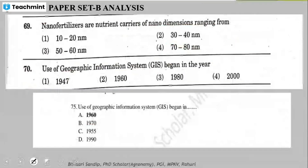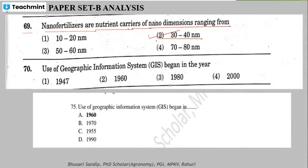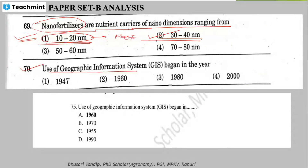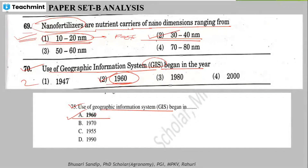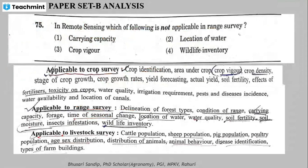Question 69: nano fertilizers are nutrient carriers of nano dimension ranging from 10 to 20 nanometers — you should remember this size. Question 70: use of geographic information system began in the year 1960. That answer is provided in the objective material in the PDF.